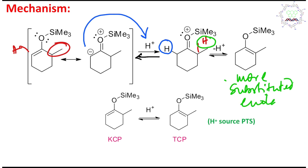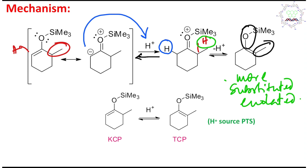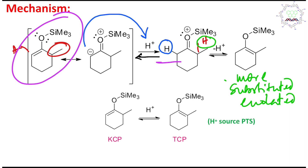Why am I saying this is the more substituted enolate or silyl enol ether? Because this is actually a double bond — this double bond is between one methyl and one OSiMe3. If you compare this with the other one, in the primary case the double bond is between one hydrogen and OSiMe3 — so that one is less substituted. So what we are getting is: less substituted enolate converting to more substituted enolate. Now, a question you may think: we are using acidic medium, and by the way, the source of acid is PTSA — para-toluenesulfonic acid. You may consider this as an organic analog of sulfuric acid.